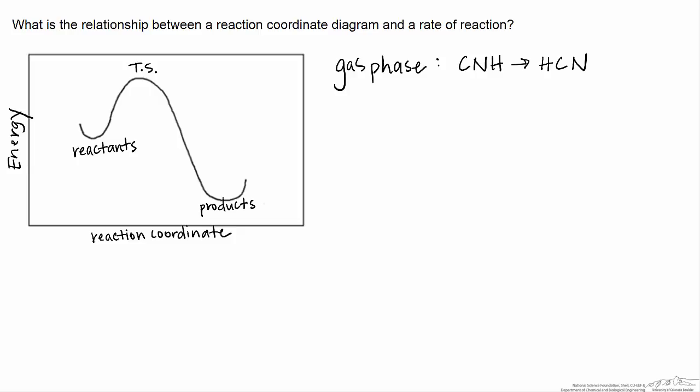We can also imagine what the transition state might look like. Since this reaction involves a hydrogen atom basically swapping sides of the molecule, you might expect that the transition state involves the hydrogen being halfway across the CN molecule on its way to being attached to the carbon instead of the nitrogen.